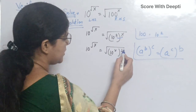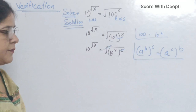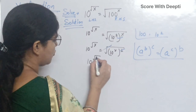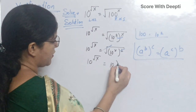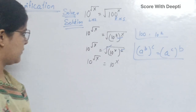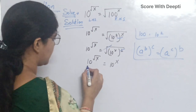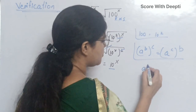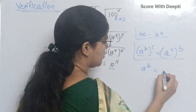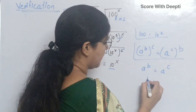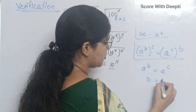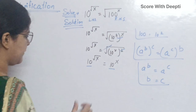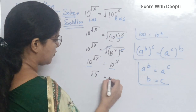The square cancels with the square root and we get 10 raised to power square root x equal to 10 raised to power x. Now, we see the base is equal on both sides. When a raised to power b is equal to a raised to power c, then b is equal to c. So in place of this, we write square root x equal to x.